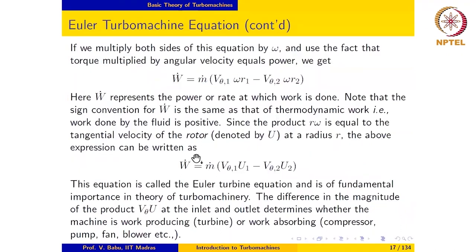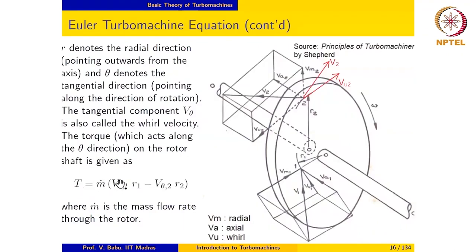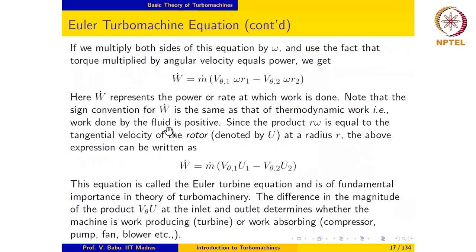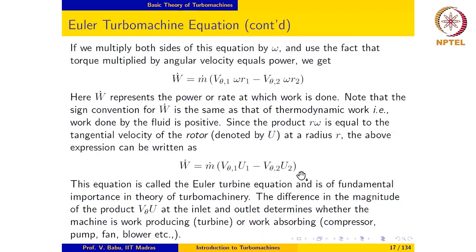If we multiply both sides of the torque equation by omega, then T × omega is the rate at which work is done — i.e., power. So power = m-dot × (Vθ1·ω·r1 − Vθ2·ω·r2). Since ω·r1 is the blade velocity U1 and ω·r2 is the blade velocity U2, this becomes: Power = m-dot × (Vθ1·U1 − Vθ2·U2). This equation is called the Euler turbine equation and is of fundamental importance in the theory of turbomachinery.